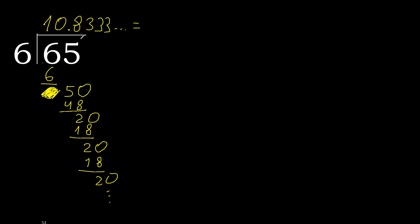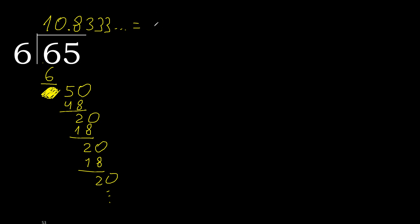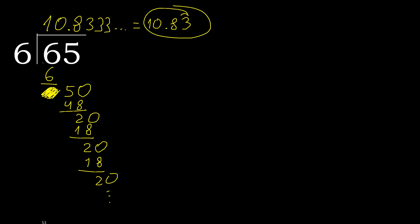Finish it: 65 divided by 6. 65 divided by 6 is — after the point, 3 repeats. Therefore like this: 10.8, then 3 repeating. Or written like this with a repeat notation.